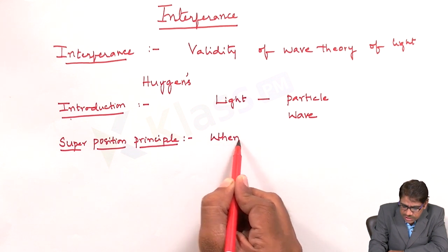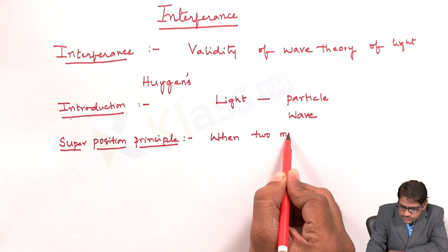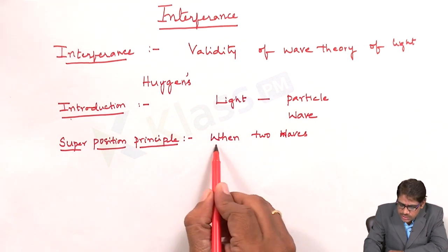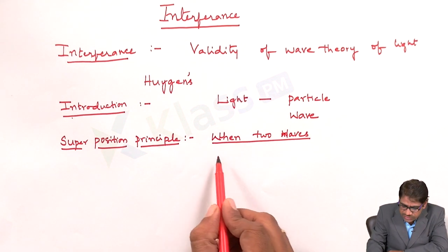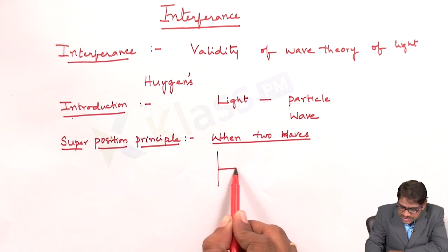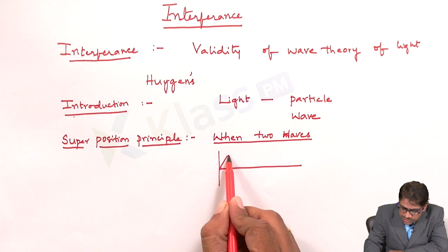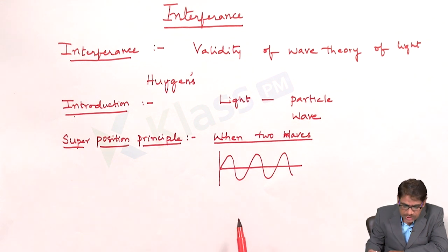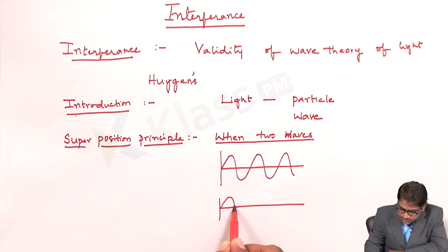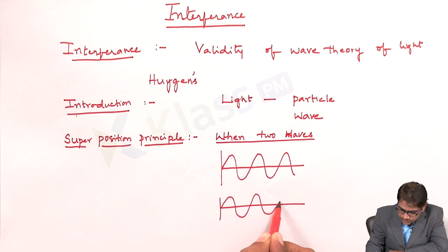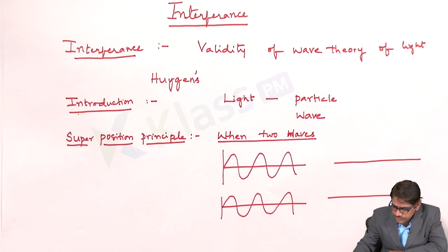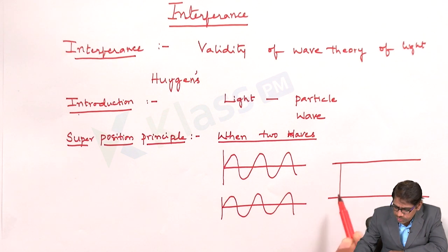Here, in terms of two waves — consider one particular medium in which a wave is propagating. There is one more wave passing through the same medium. Now if these two waves are passed through a single medium, they get superposed with respect to one another.